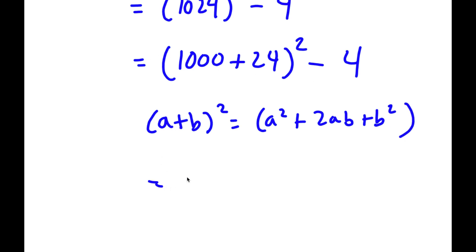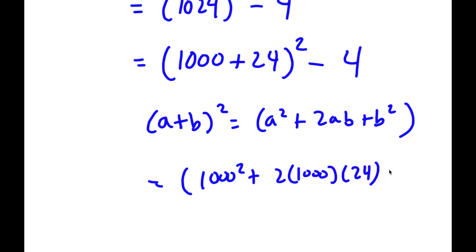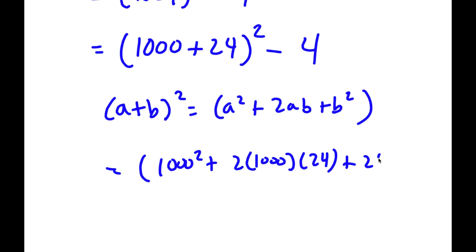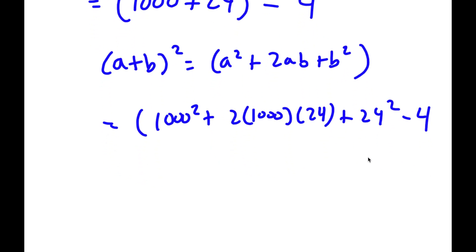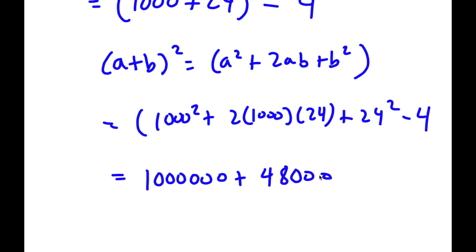So 1,000 plus 24 squared is going to equal 1,000 squared plus 2 times 1,000 times 24 plus 24 squared, minus 4. Now 1,000 squared is equal to 1,000,000. 2 times 1,000 is 2,000. 2,000 times 24 is 48,000. Plus 24 squared, which equals 576. And finally I have minus 4 at the end.